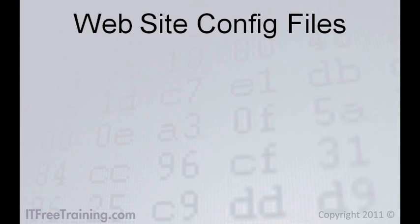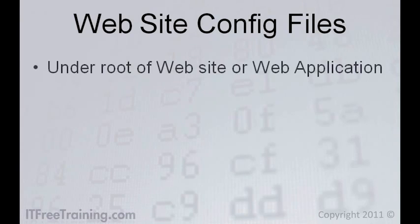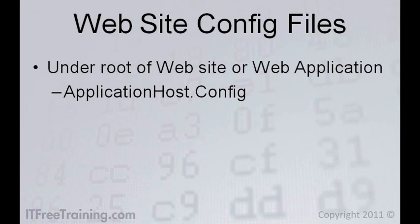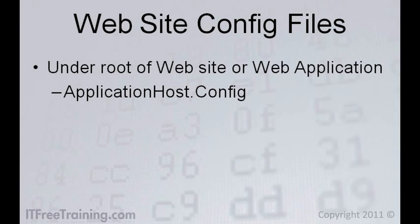IIS uses a hierarchical approach to configuration. This means that not all configuration is in the applicationhost.config file in the Windows directory. If there is configuration that is only for a specific website or web application, that configuration can be found under the root directory of that website or application. This directory will contain another applicationhost.config file, and the settings in this file will override the server settings. The advantage of this approach is that when you copy files from one web server to another, the configuration files for that website or application are copied over as well. Previously, in older versions of IIS, you would need to configure the web server from scratch after copying the data files over.